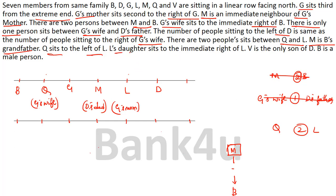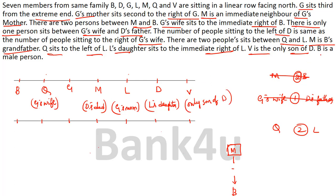Next: L's daughter sits immediately to the right of L. L's immediate right is now identified as L's daughter — and that person is D. So D is L's daughter. Next: V is the only son of D, so V is placed here as D's only son. Finally, B is confirmed to be a male person. The arrangement is now complete.